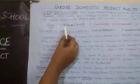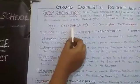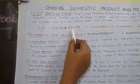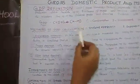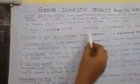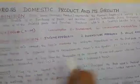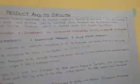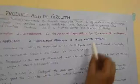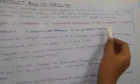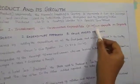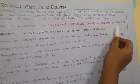GDP is equal to C plus I plus G plus X minus M. C for consumption, I for investment, G for government expenditure, X for exports, and M for imports.